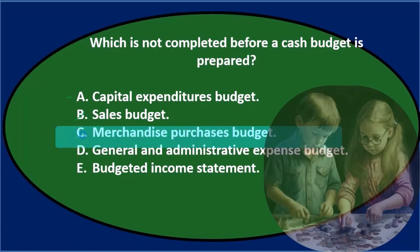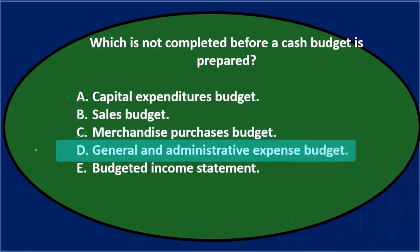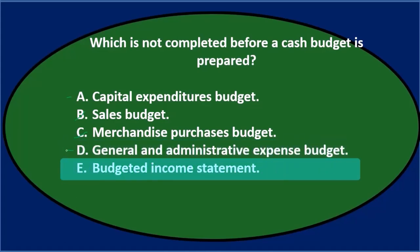We have to decide how much merchandise we're going to purchase, so that one is not it. D says general and administrative budget — that's done possibly later, so it's not one of the first things we do. E says budgeted income statement, and I'll keep that because that seems like one of the last things we do — the budgeted financial statements, balance sheet, income statement. So let's keep A, D, and E.